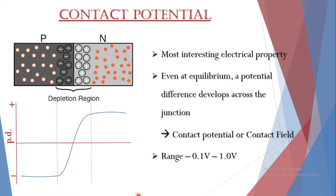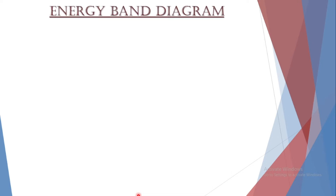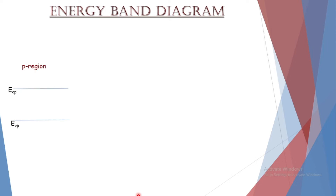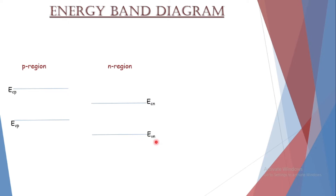Next we move on to the energy band diagram — how the conduction band, valence band, their impurity levels, and the Fermi level vary when a P-N junction is formed. For the P region we use P-type semiconductor and for the N region we use N-type semiconductor. EVP denotes the energy of the valence band corresponding to the P region, ECP is the energy of the conduction band on the P side, ECN is the energy of the conduction band on the N side, and EVN is the energy of the valence band on the N side.